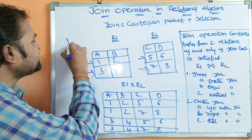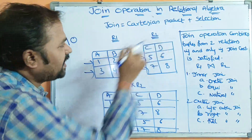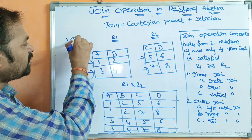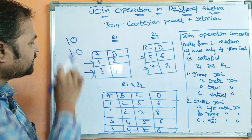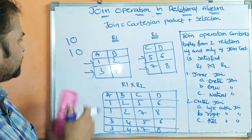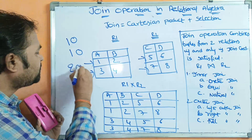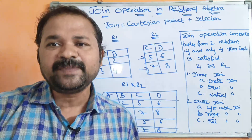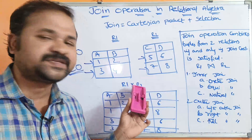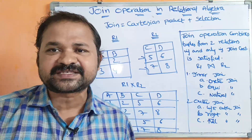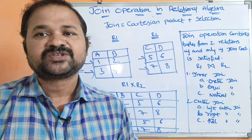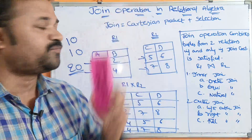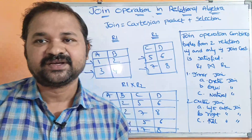Suppose if relation R1 has 10 tuples and relation R2 has 10 tuples, then every row of the first relation is to be combined with every row of the second relation. So total it produces 20 tuples. But all 20 tuples may not be needed. So the problem is cartesian product produces a large number of tuples. If we want to produce only a limited number of tuples, then we have to go for the join operation.